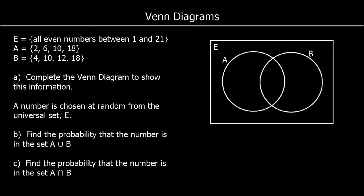Here we have a Venn diagram question. We need to complete a Venn diagram, and we're told that E, our universal set — everything we're putting into the diagram — is all even numbers between 1 and 21: so 2, 4, 6, 8, 10, 12, 14, 16, 18, and 20.